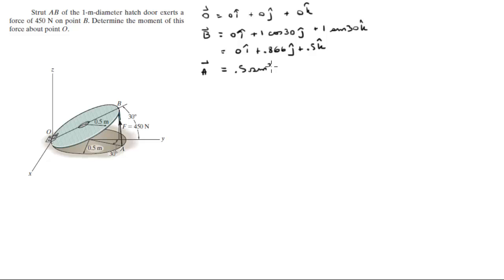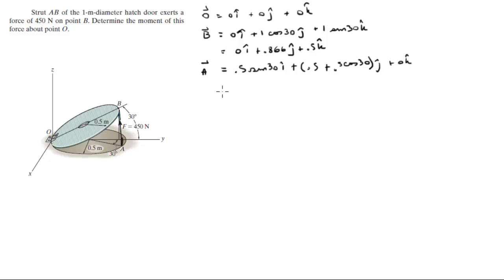Point A sits at 0.5·sin(30°) in the I, given by this angle and hypotenuse. In the J we have 0.5 plus 0.5·cos(30°), and 0 in the K. So A comes out to be 0.25i + 0.933j + 0k.